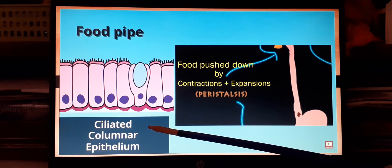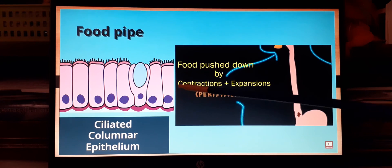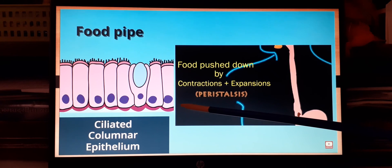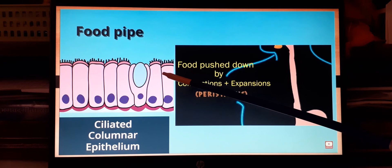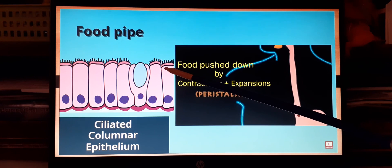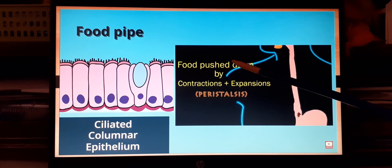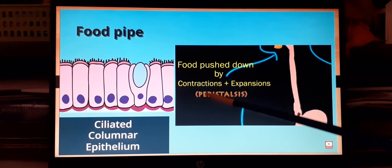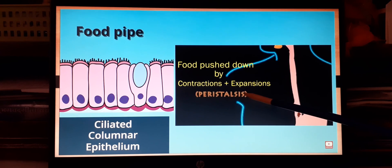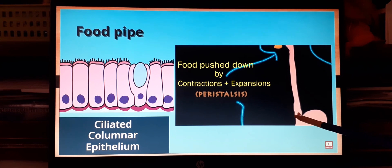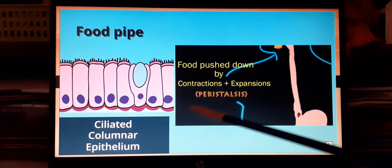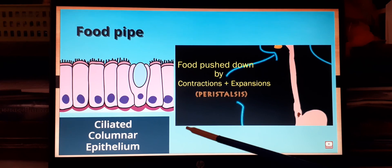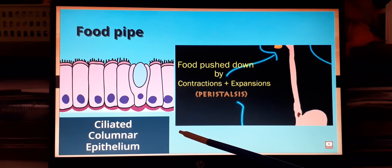Finally, there is the special ciliated columnar epithelium, which we already discussed under the shape category. It is also categorized here because it performs the special function of passing material from one end to the other. In the food pipe, during peristaltic movement, these cilia help transfer food as bolus from the pharynx to the stomach region.